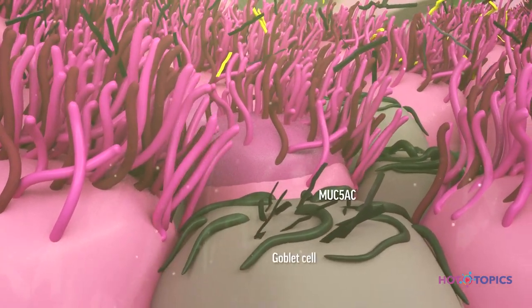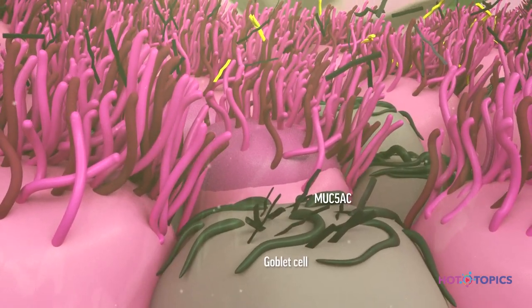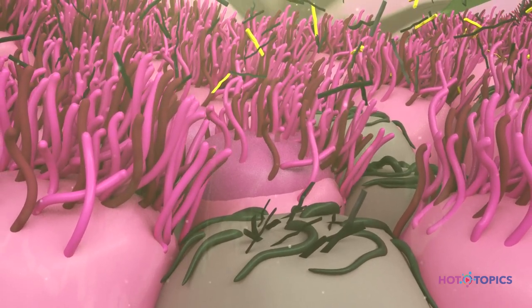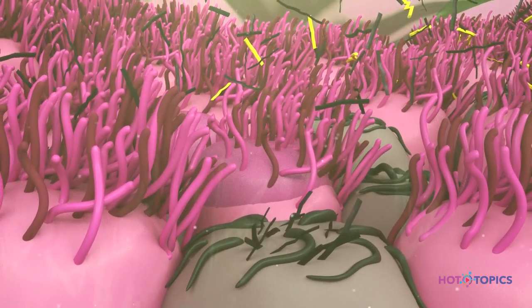Mucus dehydration leads to the collapse of the periciliary brush mucus layer, so it is no longer able to propel mucus out of the lungs.